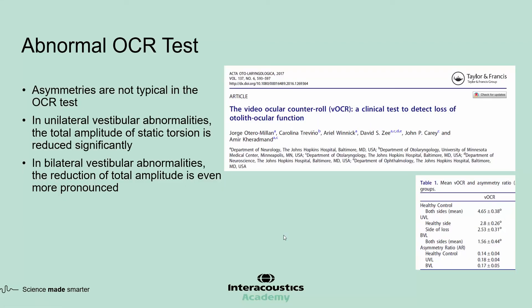Clinical testing from the same study shows that the total amplitude of static torsion is significantly reduced in unilateral vestibular abnormalities. The reduction in amplitude is even more severe for bilateral lesions. The study shows that the asymmetries were not statistically significant, meaning the test is unlikely to show you the side of lesion. The reason may be that in OCR testing we don't know what the alignment of the eyes was before the lesion — what we measure is the torsion from the baseline of upright head position, where the lesion has already caused static torsion of the eyes.